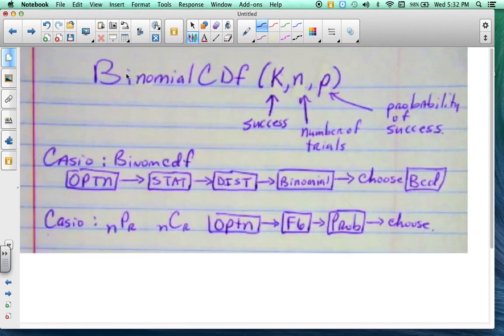Next, make sure in binomial CDF, K is your success, N is the number of trials, and P is the probability of success. Here's the ways you can get to them on the Casio. And here's the way you get to, now this is how you get to binomial CDF on the Casio. And this is how you get to permutations and combinations on the Casio.